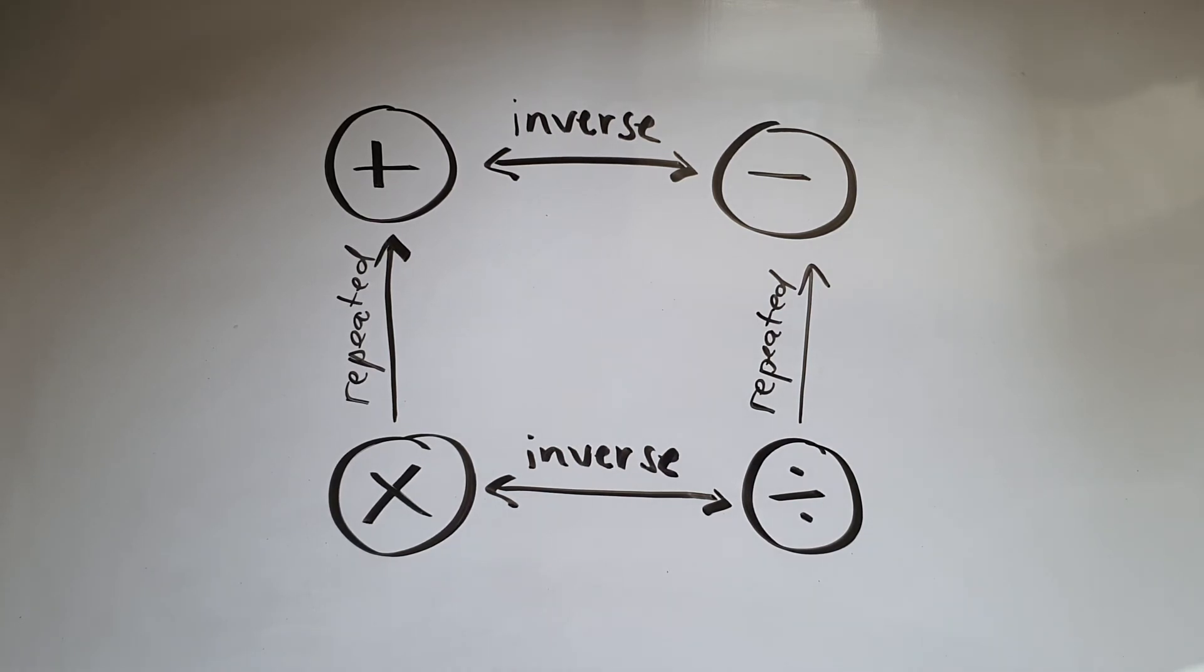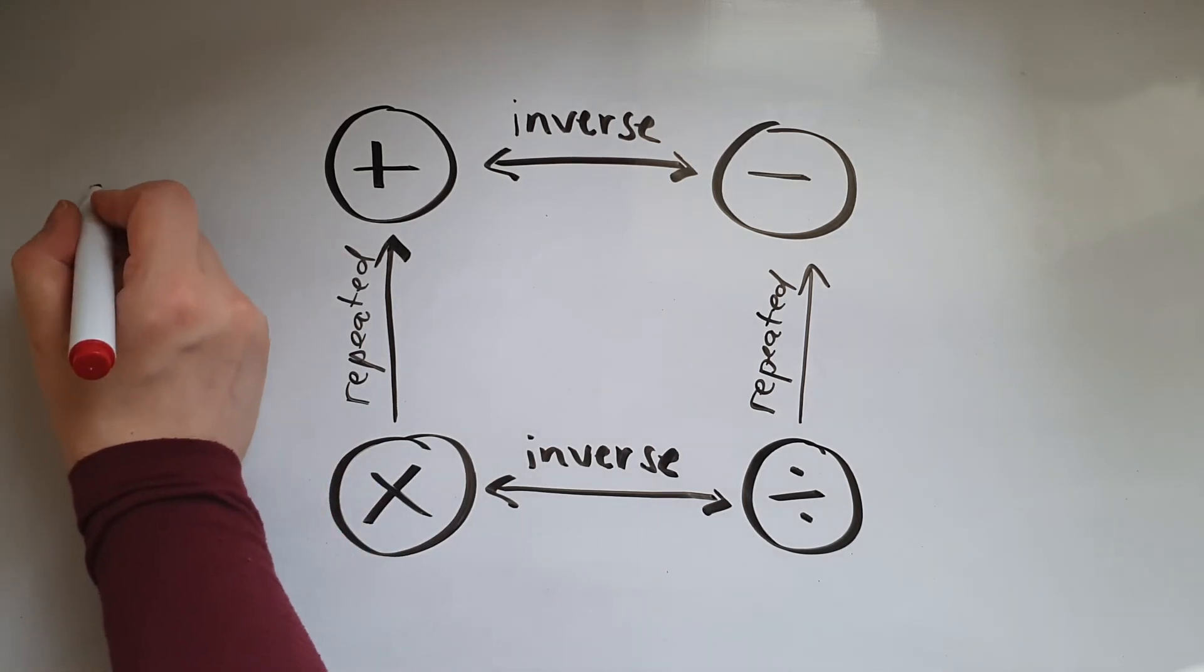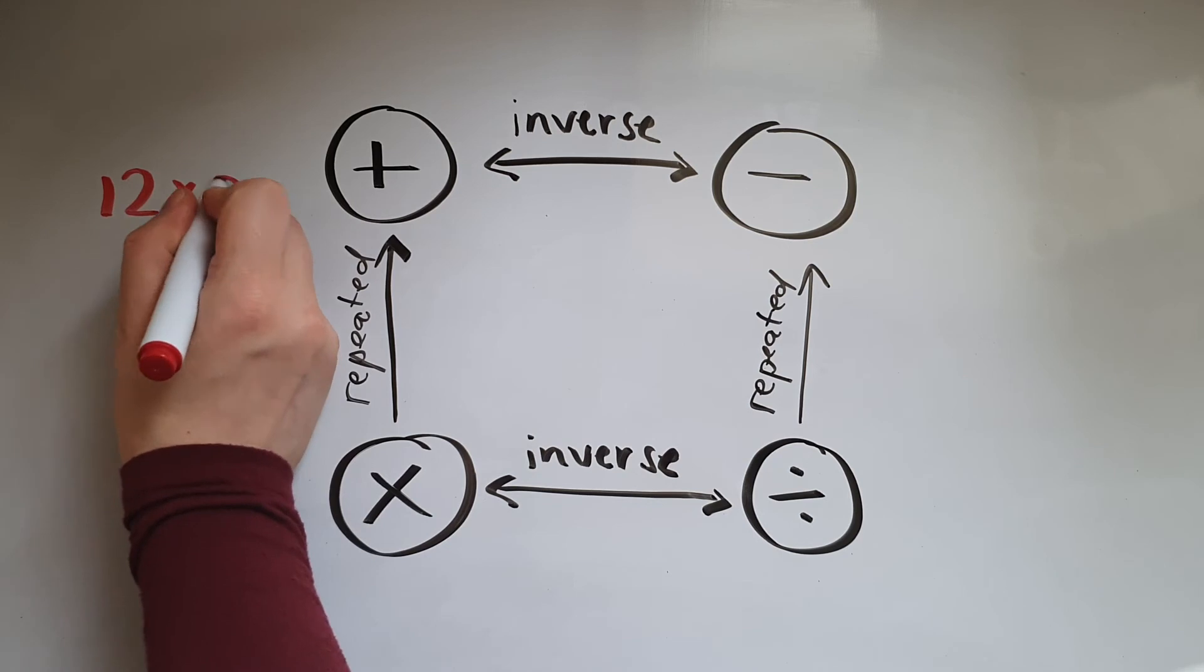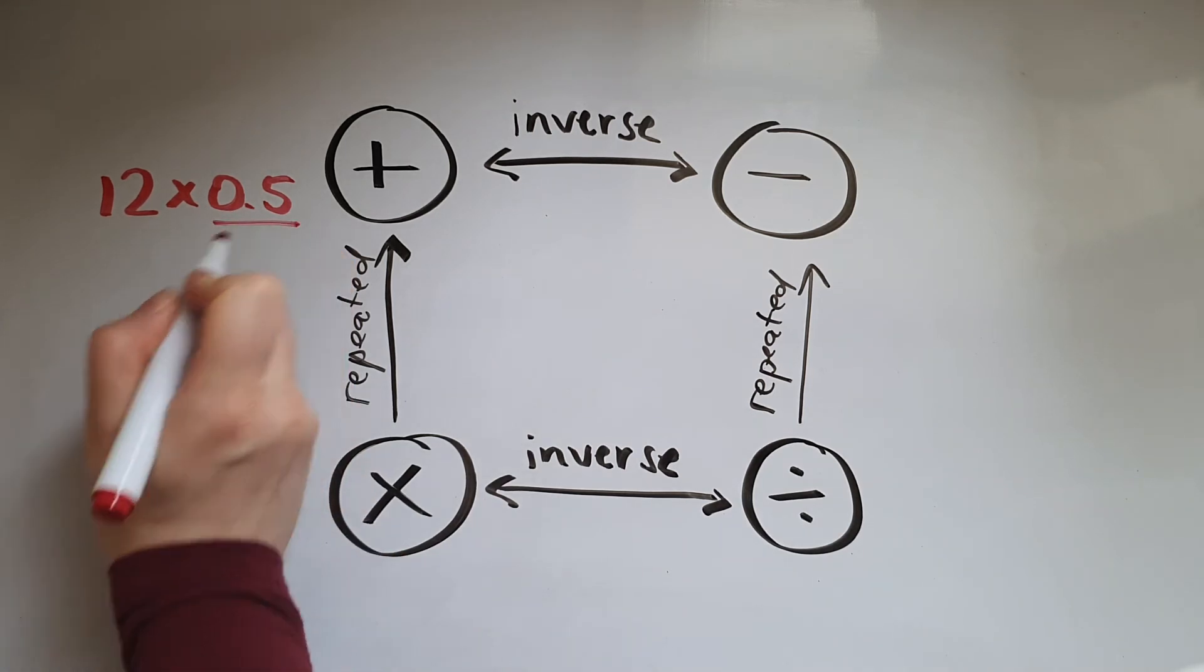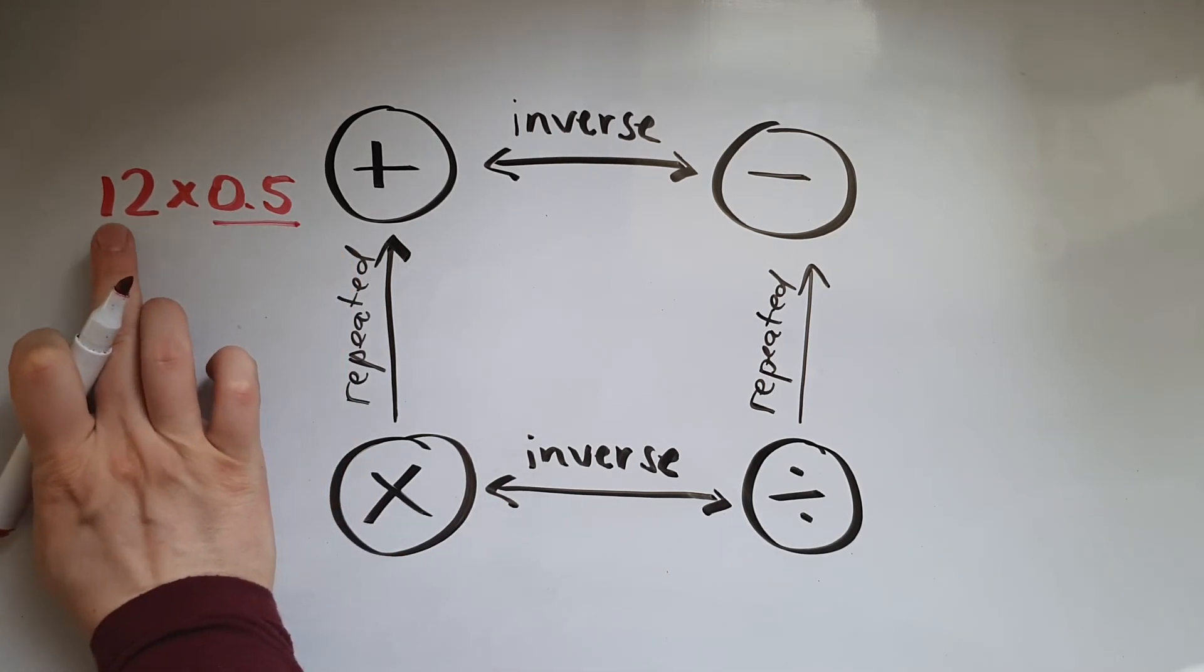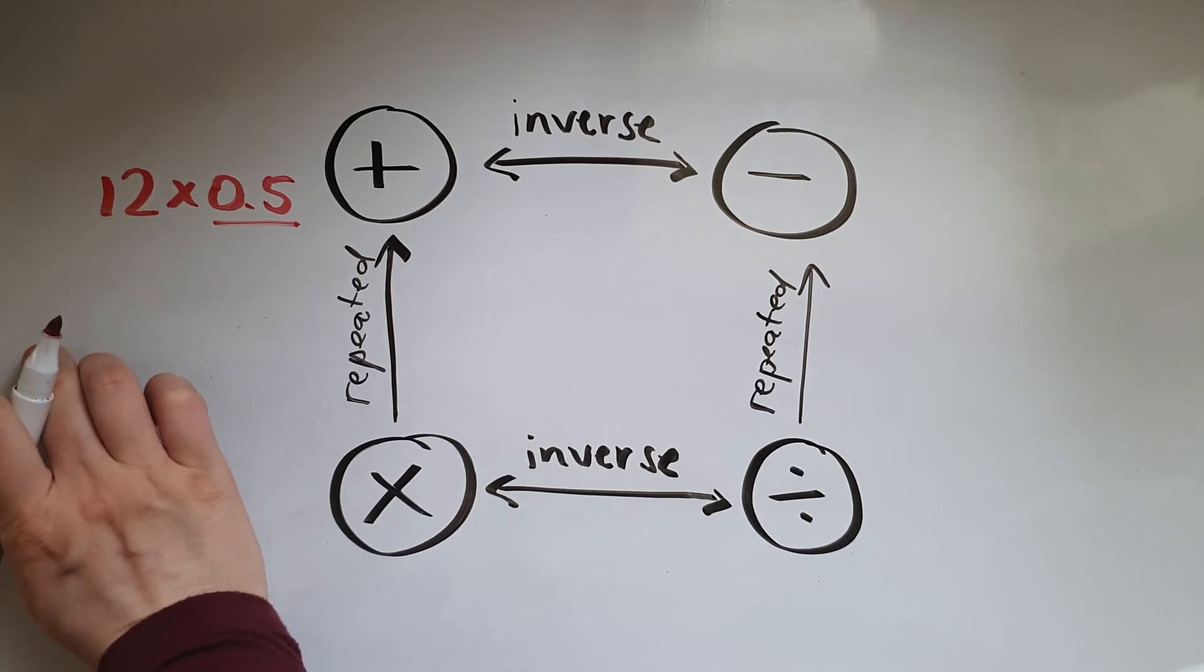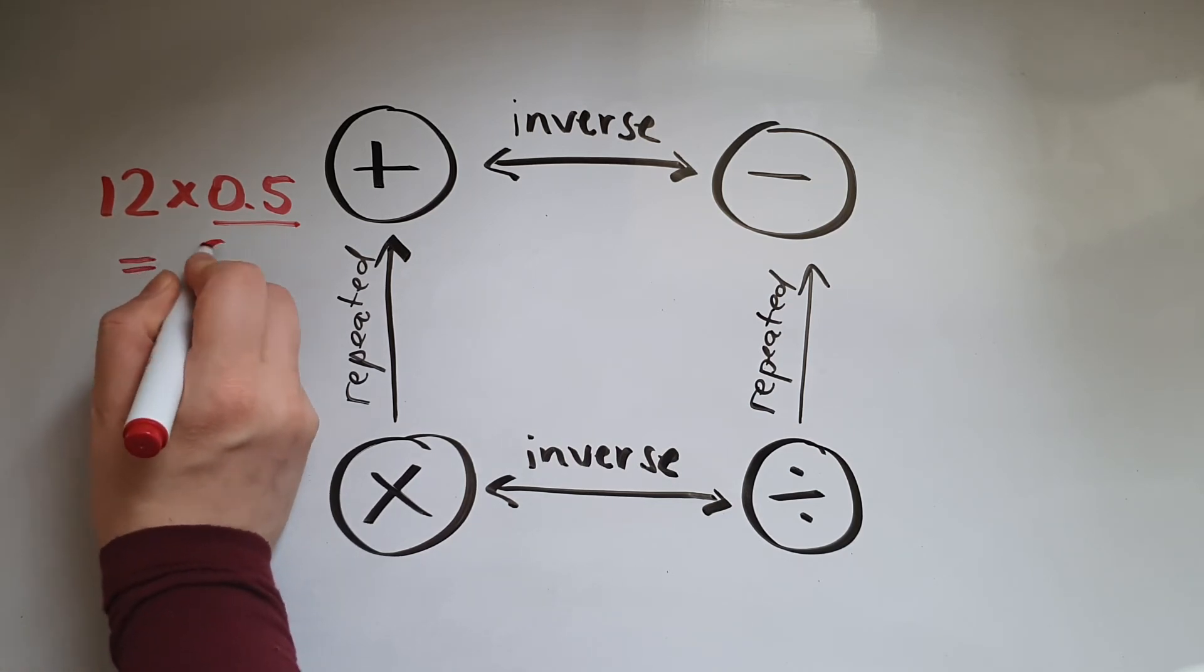Another thing I want to stop at is when you multiply by decimal. So let's say we've got 12 times 0.5. When you multiply by half, it means you're actually halving the number. So this would be 6.